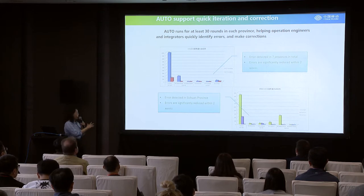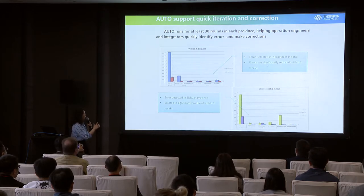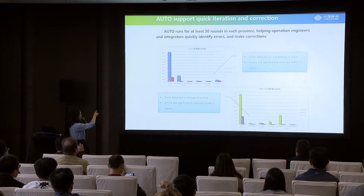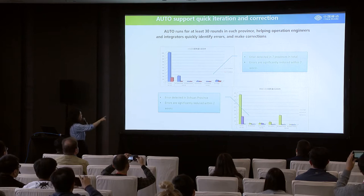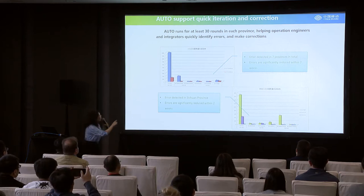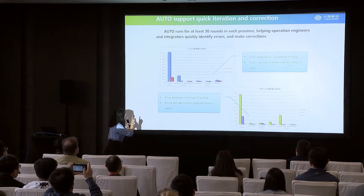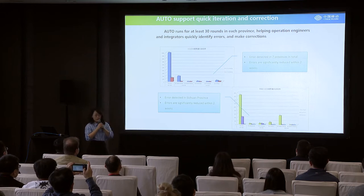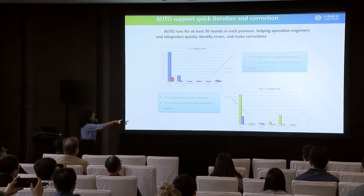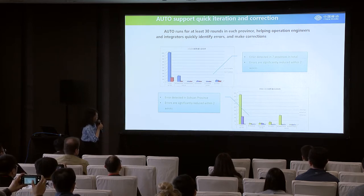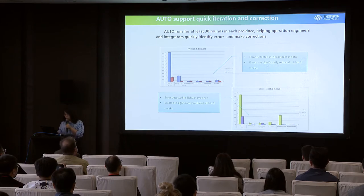Results from the eight provinces show that the major errors found are network-related — which is expected. Because we do a lot of pre-configuration and pre-testing in the lab, we actually avoid a lot of server and switch errors on site, so most problems happen at the networking layer. One figure shows how problems accumulated and then shrank across seven provinces over roughly one week. Another figure shows what happened in Sichuan province, where problems shrank after approximately two weeks of iteration.